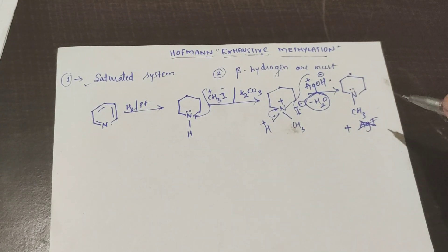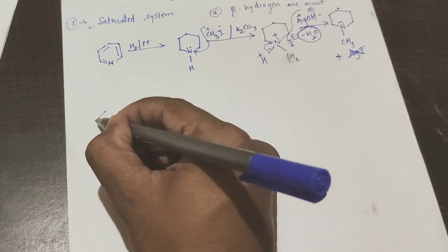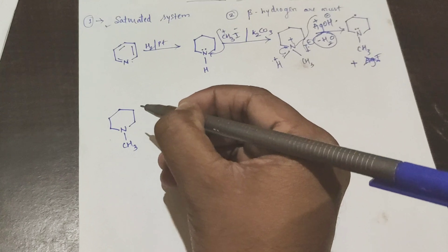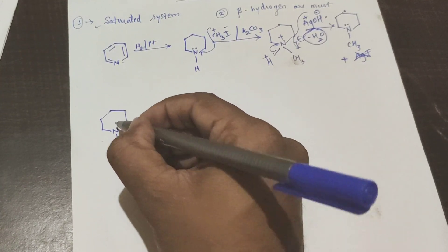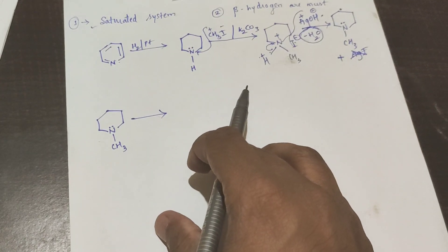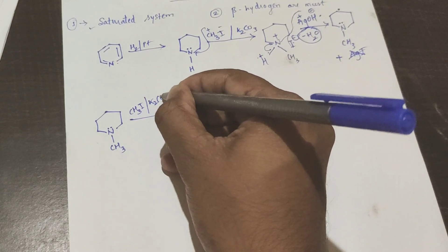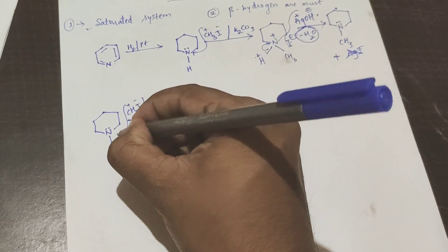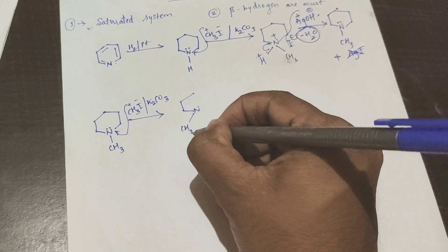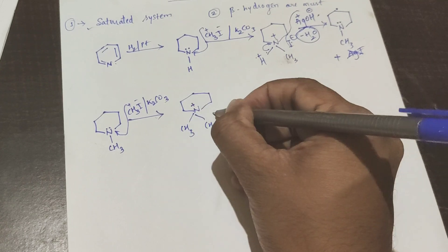We are not bothered about the AgI. So we got this product. Next, we have to do further methylation until we get the nitrogen out of the ring. Now with the structure we obtained, again I will do CH3I methylation in the presence of base. The lone pair of electrons again allows CH3 to come and attach to the nitrogen.